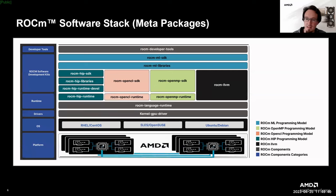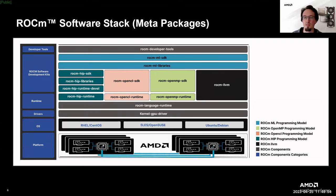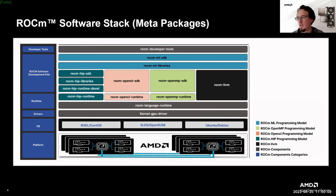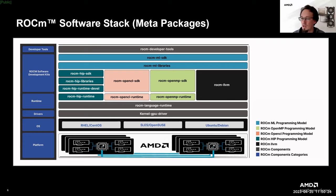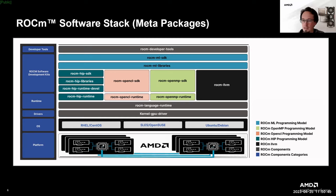This slide gives an overview of the different meta packages that you can install from operating system packages. At the bottom we have the hardware platform — for example, AMD Instinct accelerators. On top of that we have the actual operating system, such as Red Hat, OpenSUSE, or Ubuntu. Above that we have the drivers, meaning the kernel GPU driver, also known as the KFD driver. This is independent of whether you're using the meta packages for the ROCm release or the AOMP standalone installation procedure. Sitting on top of the kernel GPU driver, we have multiple runtimes.